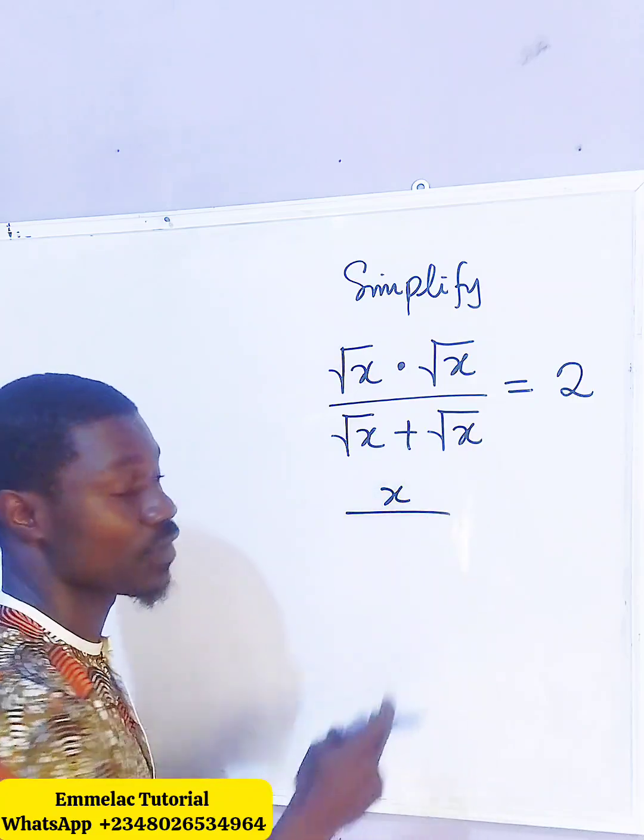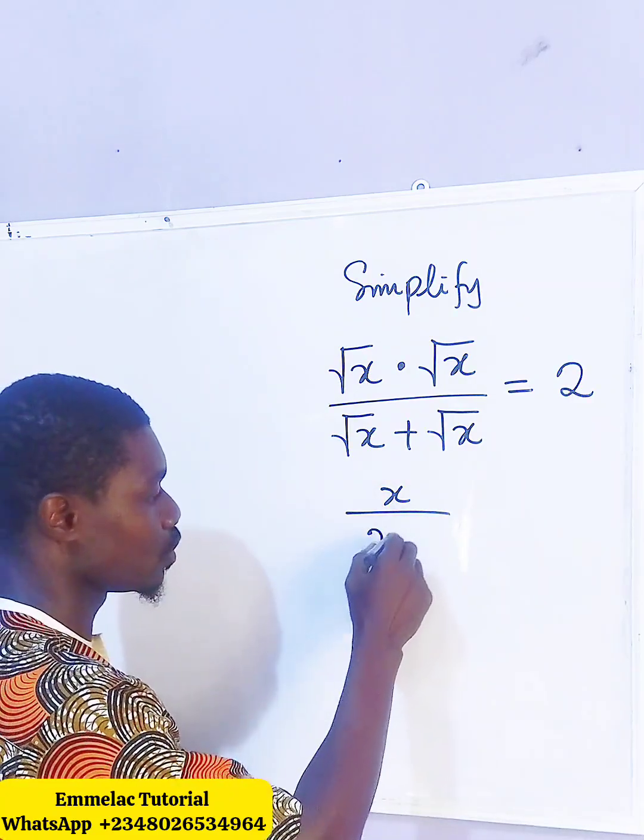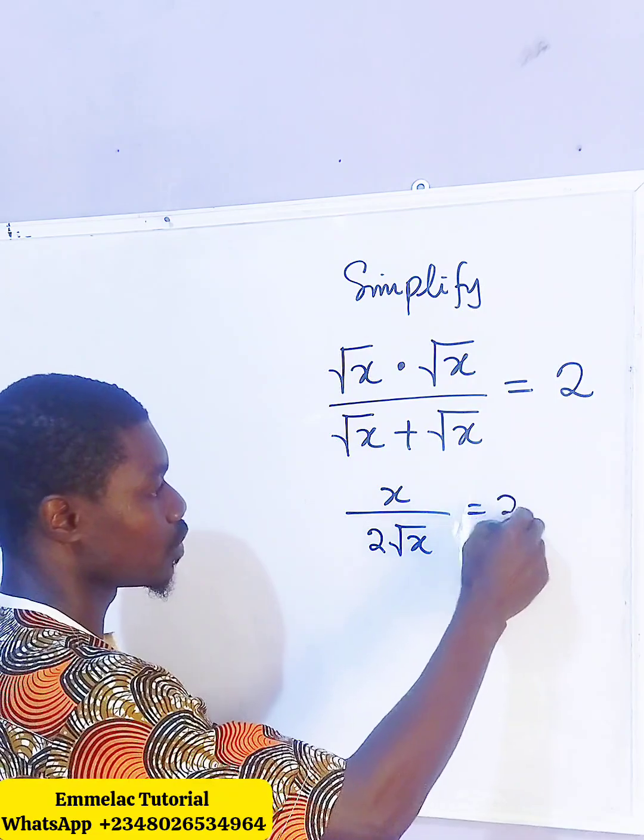So the square root of x plus the square root of x here will give us 2 root x all equals to 2.